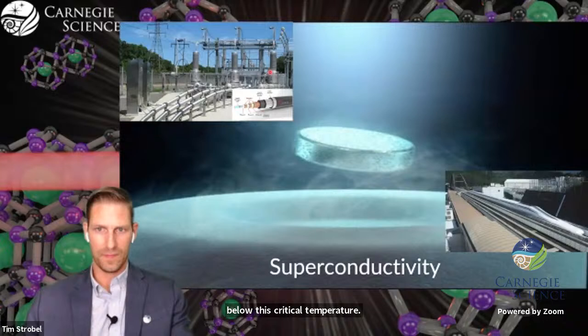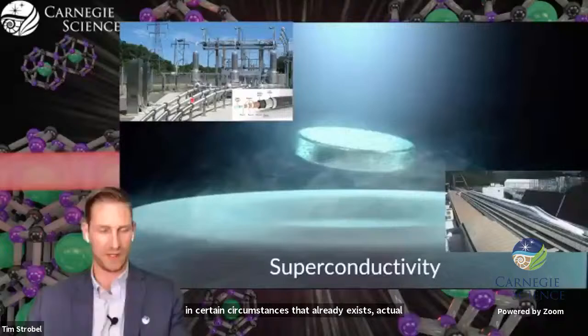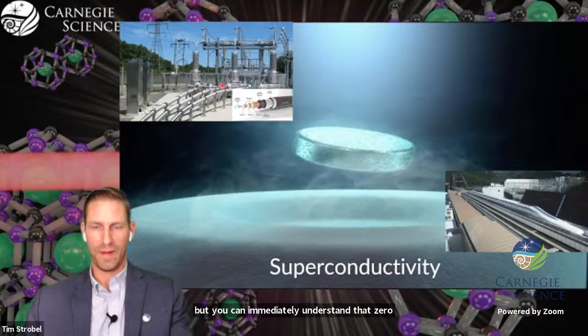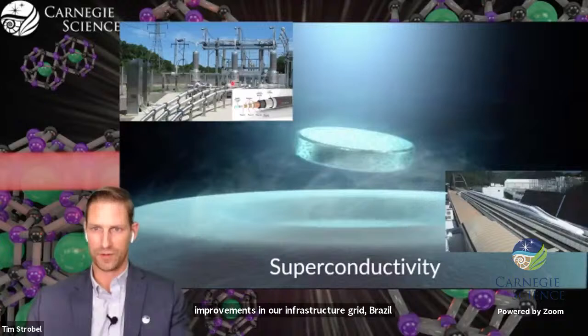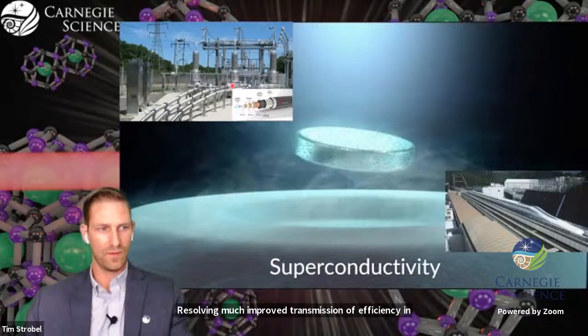One of the potential applications of this is something like a magnetic levitation train. The other very interesting property associated with superconductivity is that of zero electrical resistance below this critical temperature. These are actual superconducting cables that can transmit electricity. Zero resistance transmission would make for dramatic improvements in our infrastructure grid, resulting in much improved transmission efficiency.